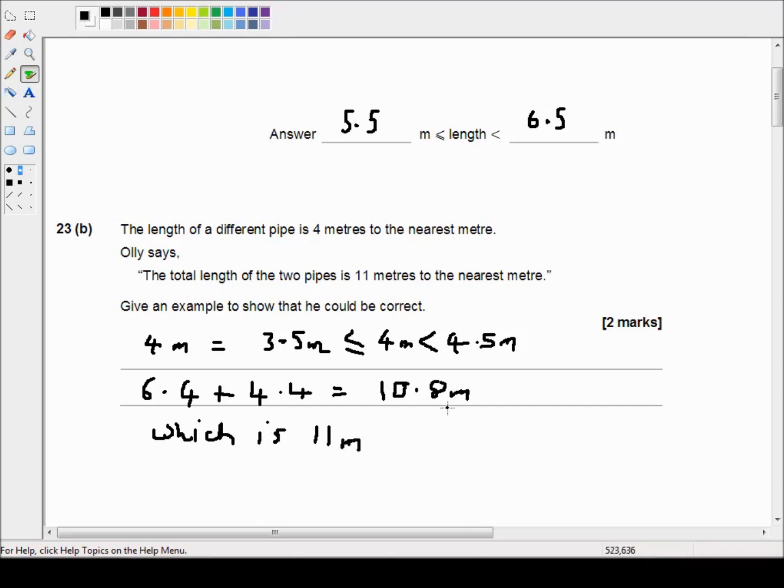10.8 is bigger than 10.5 so that is 11 meters to the nearest meter.